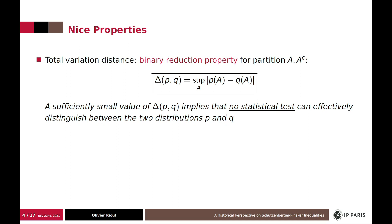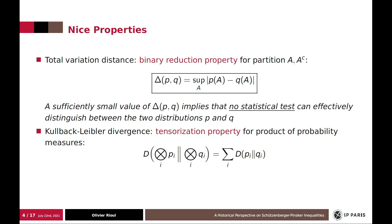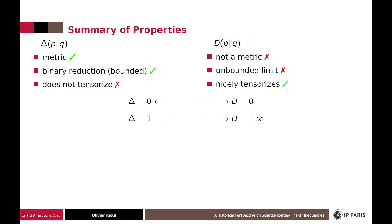However, for Kullback-Leibler divergence, we have another very nice property, which delta doesn't have. It nicely tensorizes for products of probability measures. And that is especially interesting when I give an application. Summary of properties: on one hand, you have a metric. On the other, not a metric. On one hand, you have a bounded distance with binary reduction, which you don't have on the other. But on the other hand, you have nicely tensorization.